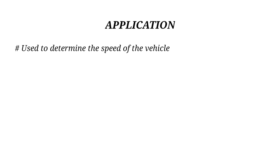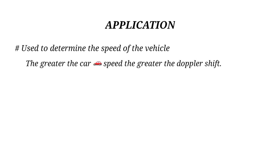The radar gun works on Doppler shift principles. Signals are transmitted toward fast-moving objects, which reflect the signals back to the receiver. If the vehicle is moving towards the police, the reflected signal has a higher frequency than transmitted. The received frequency and the transmitted frequency are compared — Fd is directly proportional to velocity. If you travel faster, the frequency difference is larger; from that frequency difference, the speed of the vehicle is calculated.